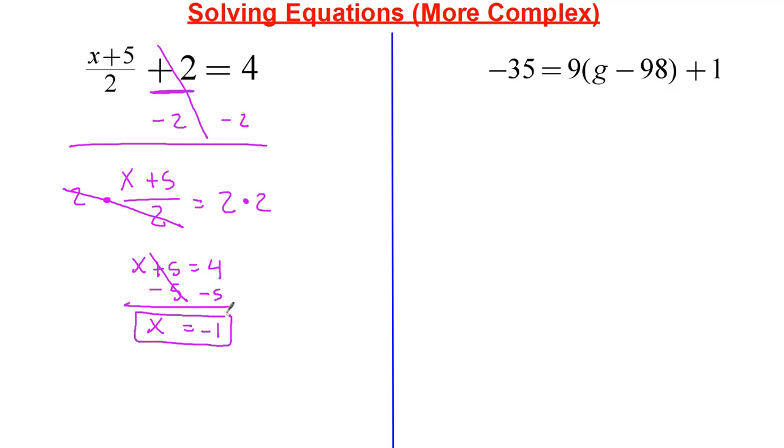Now let's see if that makes sense. Negative 1 plus 5 over 2 plus 2 equals 4. Negative 1 plus 5 is 4. 4 divided by 2 is 2. 2 plus 2 is 4. And there we go. Excellent. So x is equal to negative 1.